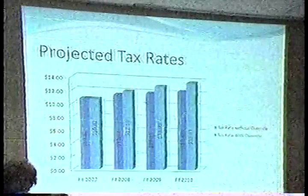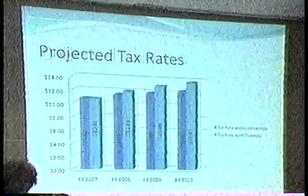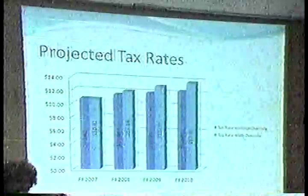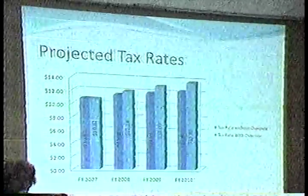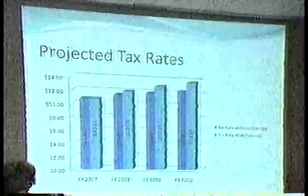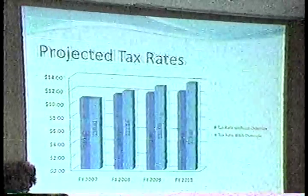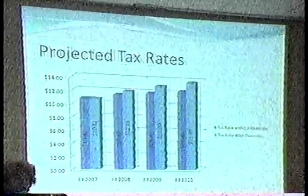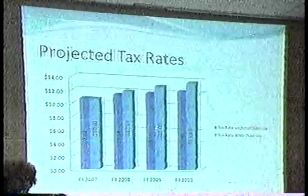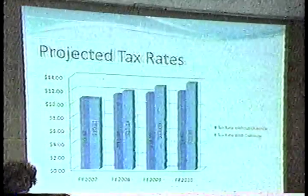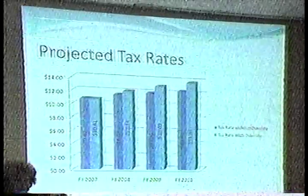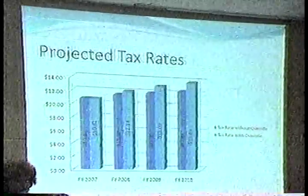You can see that if we were using the same basis — in other words, no change in valuation — in 2008, a no-override budget would have the tax rate go to $11.57. You can calculate based on what your current tax bill is what your tax bill would be in each of the following years.